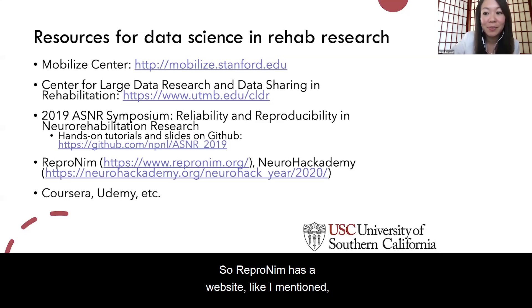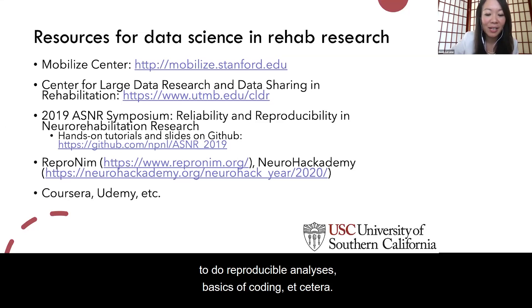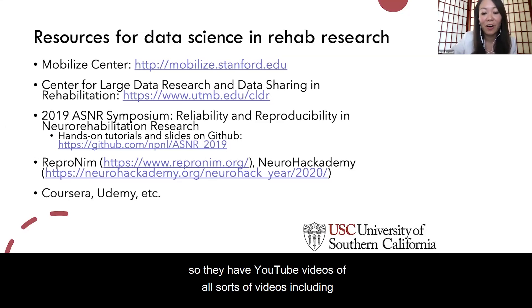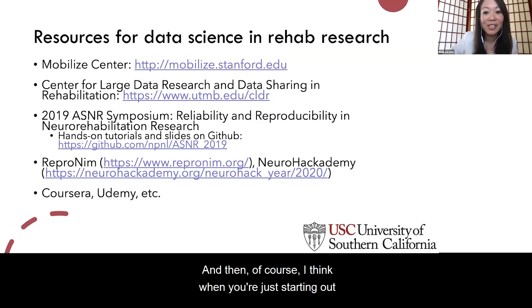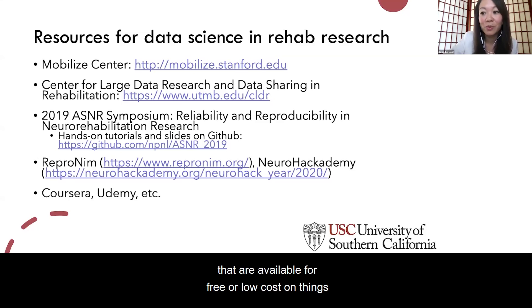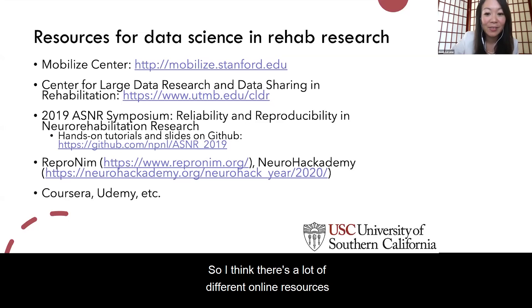From the neuroimaging community, there's a lot of great resources because there's been a big push for reproducibility using data science tools to organize, manage, and analyze data, and many of those tools can be extrapolated to rehab research. ReproNIM has a website with great course curricula for reproducible analyses and basics of coding. NeuroHackademy went virtual this year, so they have YouTube videos on how to use GitHub, Docker, Python, and more. When you're just starting out learning data science, there are also basic resources available for free or low cost on things like Coursera or Udemy.